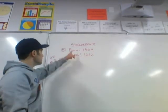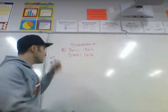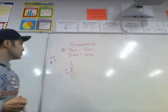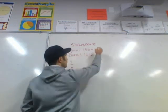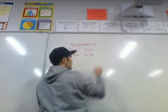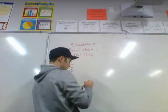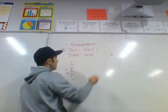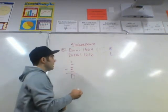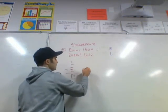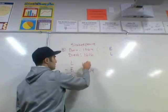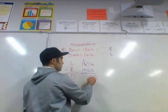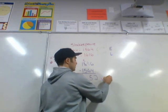Here's a homework prompt: Shakespeare was born in 1564 and died in 1616. How old was he when he died? We take the later date and subtract the earlier date. 1564 came first, so that's the earlier date. 1616 came second, so that's the later date. 1616 minus 1564: 6 minus 4 is 2, and 16 minus 15 gives us 5. So Shakespeare was 52 years old when he died.